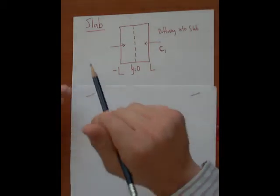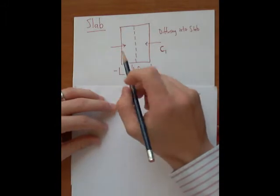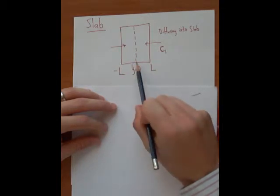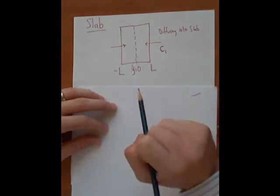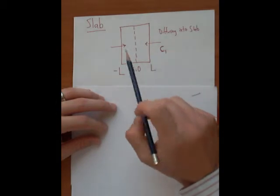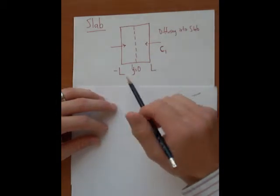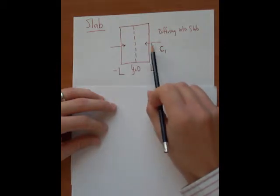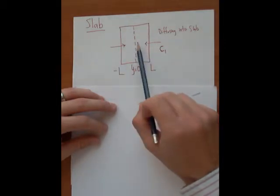So to set up our slab, we're going to make the coordinate system where Y equals zero right in the center of the slab, and then the half thickness of the total slab would be Y equals L. Again, the solute, for instance, glucose or whatever it may be, outside the slab will say it's C1, and this is diffusing into the slab in both of these sides.